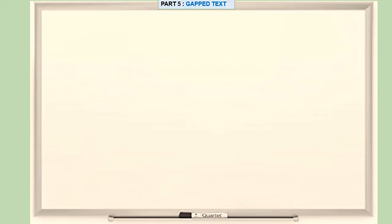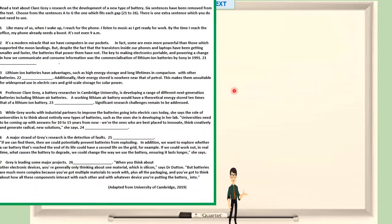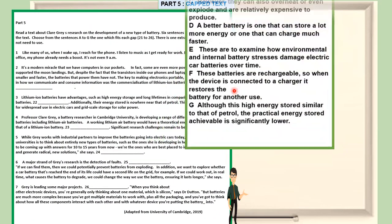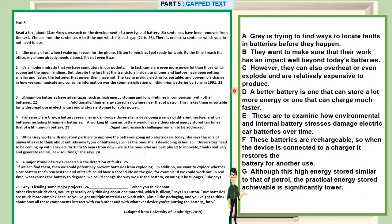Let me show you how a gap text question looks like. So this is the question, part five, and these will be the sentences or the answers. We have A to G. This question is taken from session one, year 2021 — the latest format for reading part five.